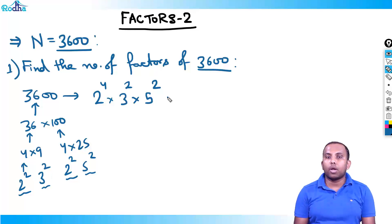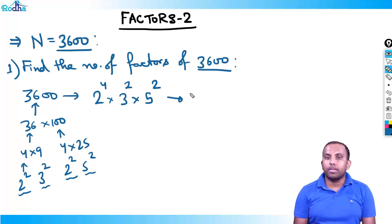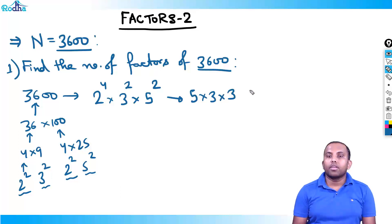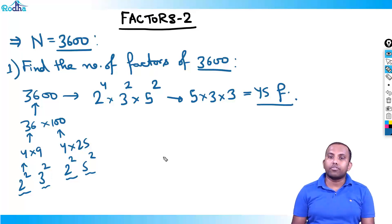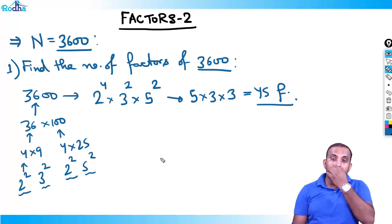How many factors? Using the formula: (4+1)(2+1)(2+1) = 5 × 3 × 3 = 45. So 3600 has 45 factors.